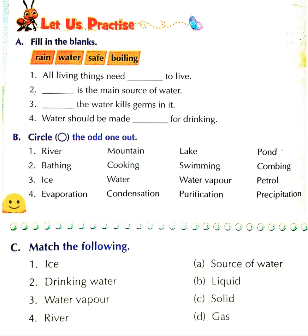Second is: bathing, cooking, swimming, and calming. Bathing, cooking, and swimming all need water to do. While calming — there is no need of water. So calming is the different word; you have to circle it out.